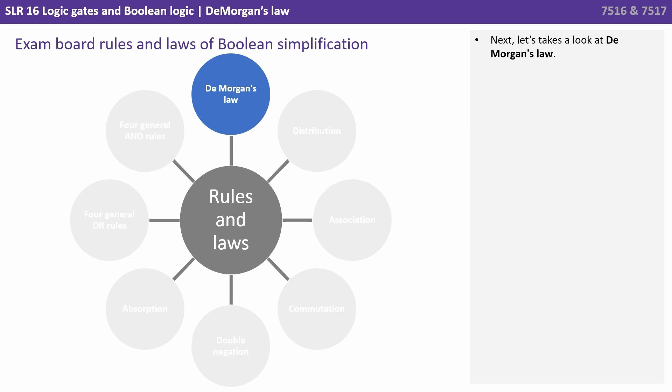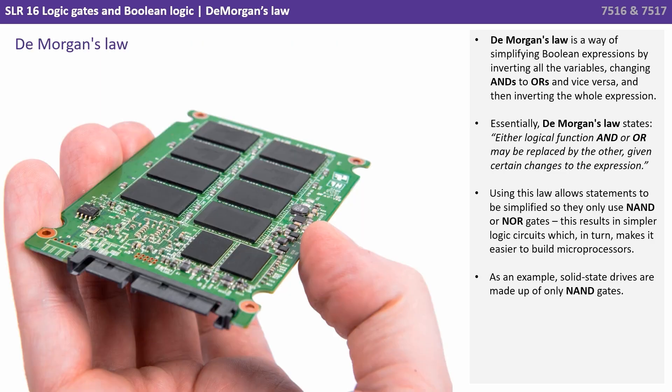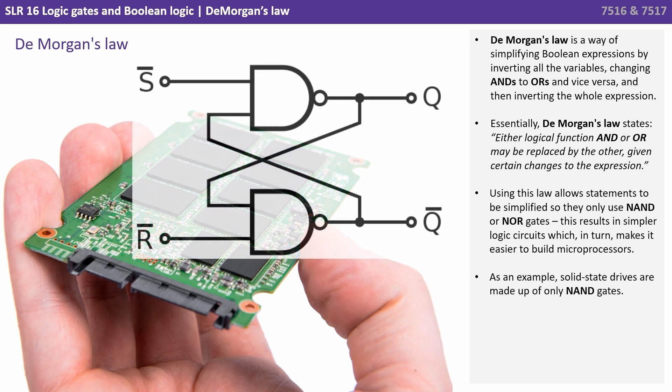Next let's take a look at De Morgan's Law. De Morgan's Law is a way of simplifying Boolean expressions by inverting all the variables, changing AND to ORs and vice versa, and then inverting the whole expression. Essentially, De Morgan's Law states, either logical function AND or OR may be replaced by the other given certain changes to the expression. Using this law allows statements to be simplified so they can only use NAND or NOR gates. And this results in simpler logic circuits, which in turn makes it easier to build microprocessors. As an example, solid state drives are made up of only NAND gates.